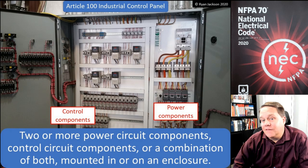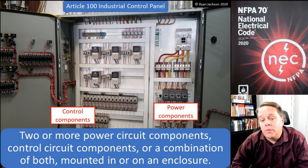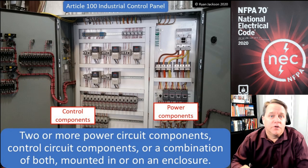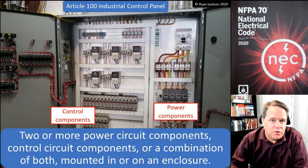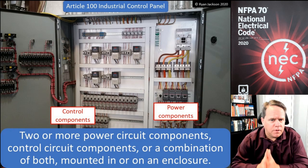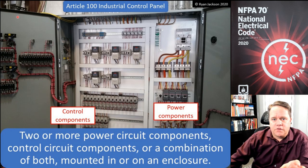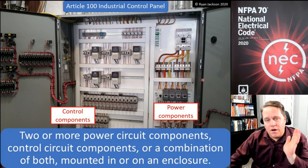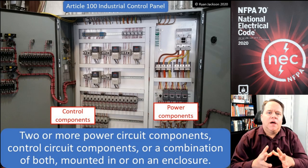Next up we have 'industrial control panel' here in Article 100. This is two or more circuit power circuit components, control circuit components, or a combination of both, mounted in or on an enclosure. Looking at the photograph here, this certainly meets that definition — we have an enclosure, control components on the left, and power components on the right. That is definitely an industrial control panel.